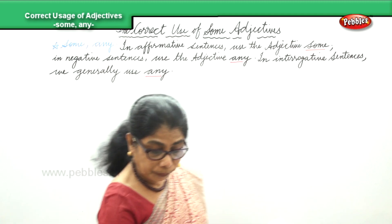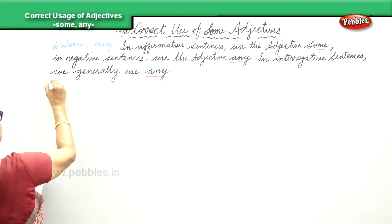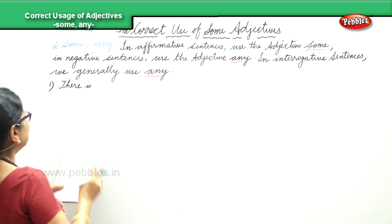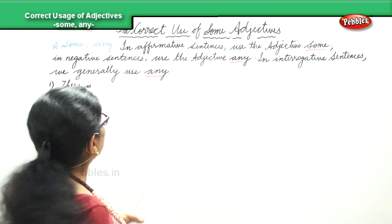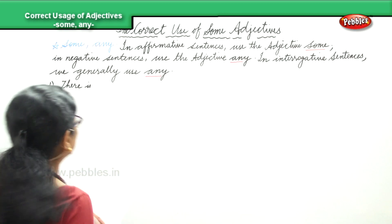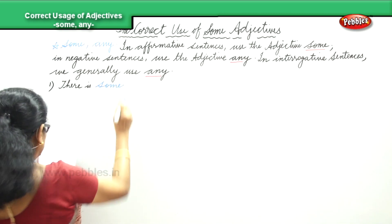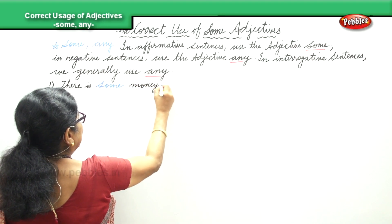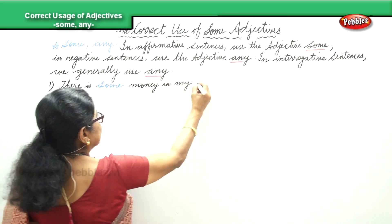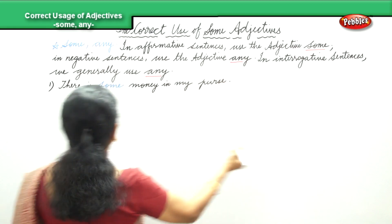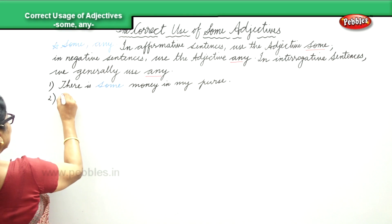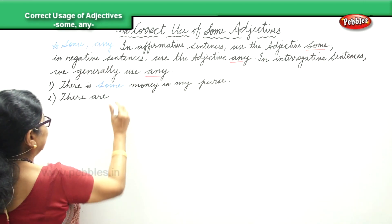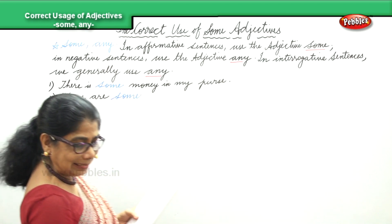Now let's look at sentences to see how these are used. First: 'There is some money in my purse.' Second: 'There are some letters for you.'